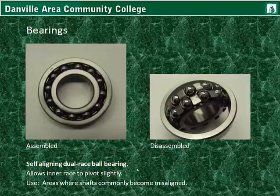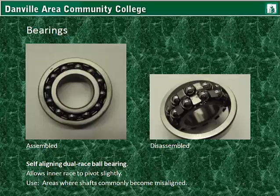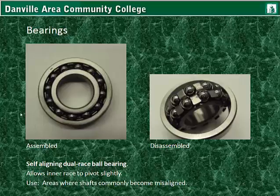Here is a self-aligning dual race ball bearing. This type of ball bearing allows its inner race to pivot slightly. It's sort of arched between the outer edges of the inner race, and the inside of the outer race is tapered as well. So once the bearings are inserted, the center point where the shaft would go through is able to pivot from side to side slightly, while still maintaining the ball bearings within the track. These types of bearings are used where the shafts become slightly misaligned, such as a carrier bearing.